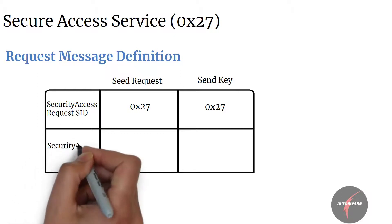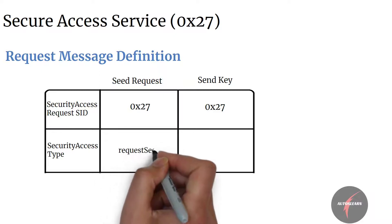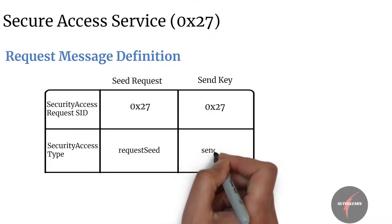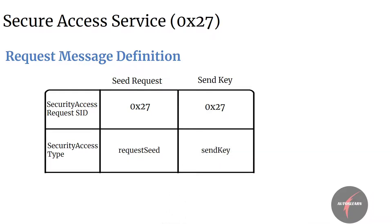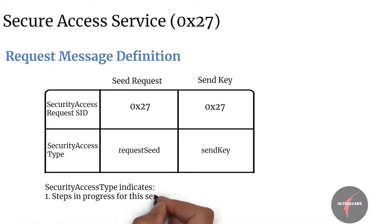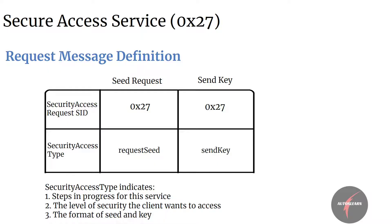For request seed, we have the sub-function mapped to secure access type equal to request seed. For send key request, we have the sub-function mapped to secure access type equal to send key. The sub-function parameter secure access type indicates to the server different steps in progress for this service, the level of security the client wants to access, and the format of seed and key.